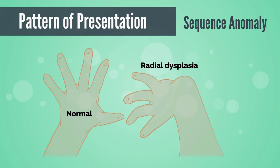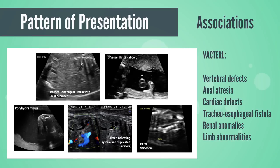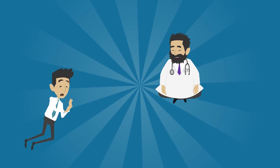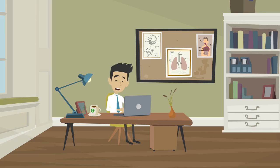Sequence anomalies result from an insult in development at one point in time and then the subsequent structures that follow — an example is radial dysplasia. Field defects affect a specific region, such as an acropectoral-renal field defect. Finally, associations are seen in conditions such as VACTERL association.